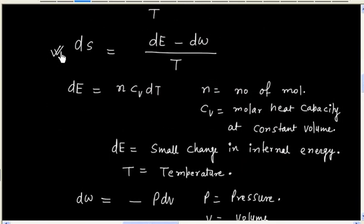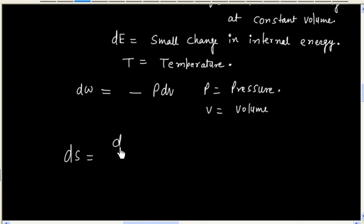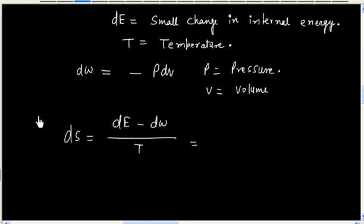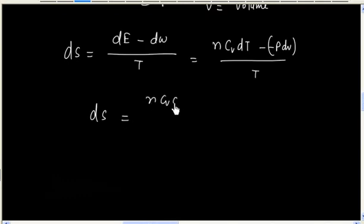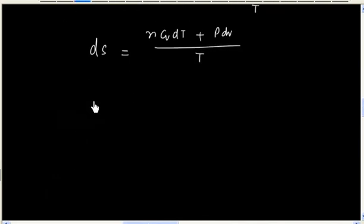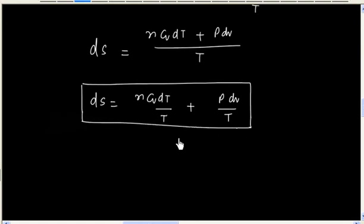So we can write the same expression: dS equals (dE minus dW) divided by temperature. Substituting dE as NcV dT and dW as minus P dV, this becomes (NcV dT plus P dV) divided by temperature. So we can separate this as: dS equals NcV dT/T plus P dV/T. This is the expression for a small change in entropy.